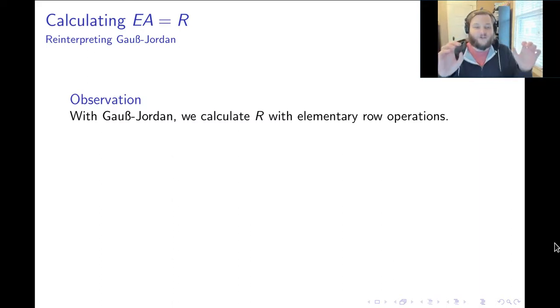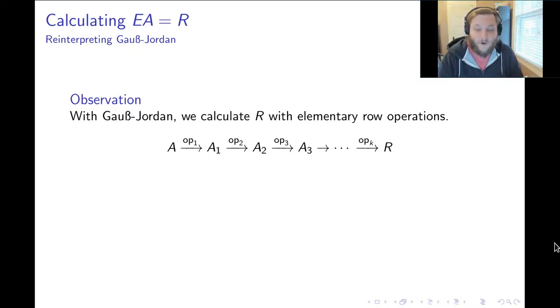Now, the question is, how does that help us figure out what EA equals R is? In other words, if you have the matrix A, how do you figure out the matrix E? Well, remember, the way we go from A to R is by using the Gauss-Jordan algorithm with elementary row operations. So, you start with your matrix A, you do your first operation to get to a new matrix, you do your second operation to get to another matrix, and you keep doing operations until you arrive at the reduced row echelon form of A.